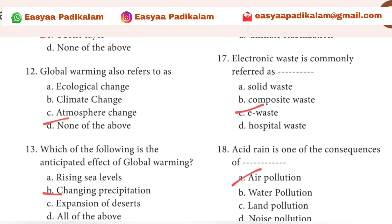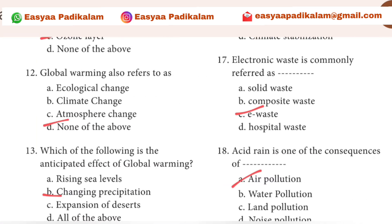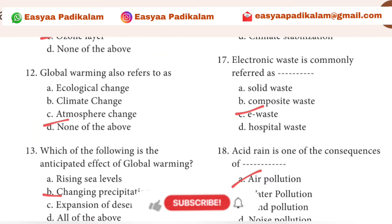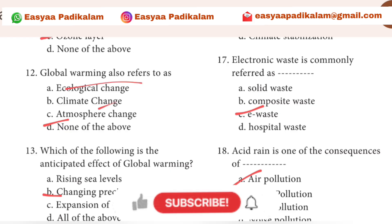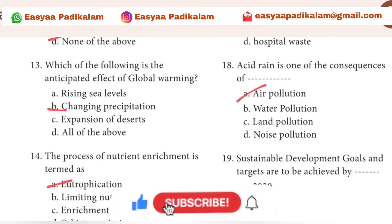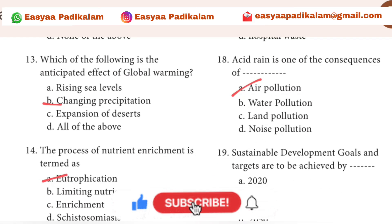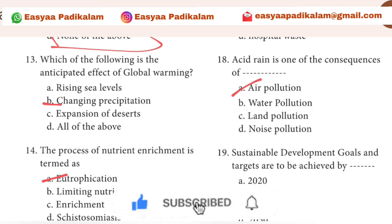Global warming also refers to us — global warming, we have temperature. We will have none of these, we have to choose. 13th question: which of the following is the anticipated effect of global warming?